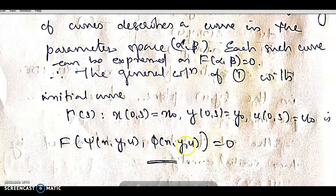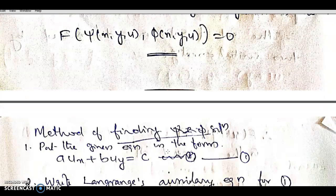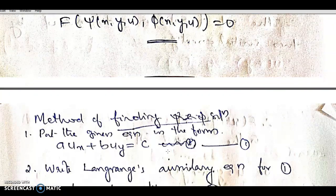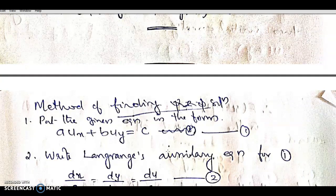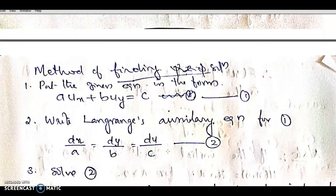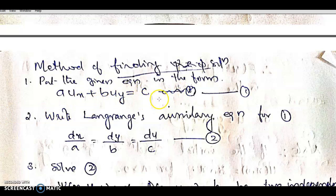With ψ and φ as functions, I will show you the method of finding the solution using the Lagrange method. We write the given equation in the form a·u_x + b·u_y = c.